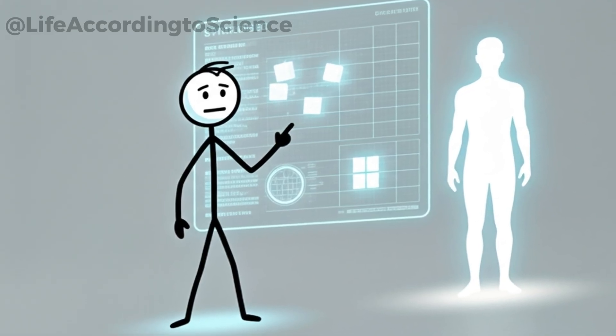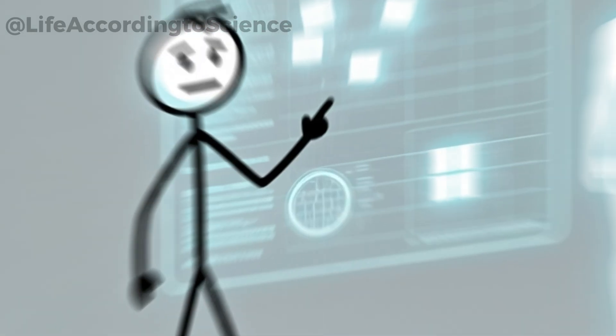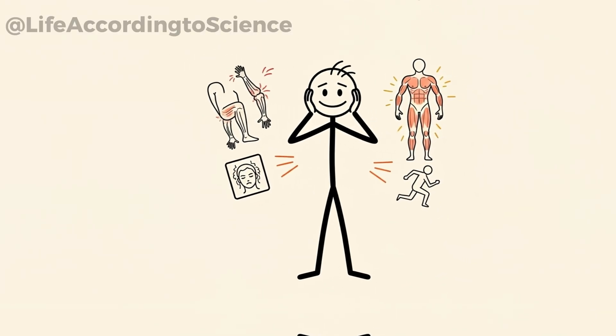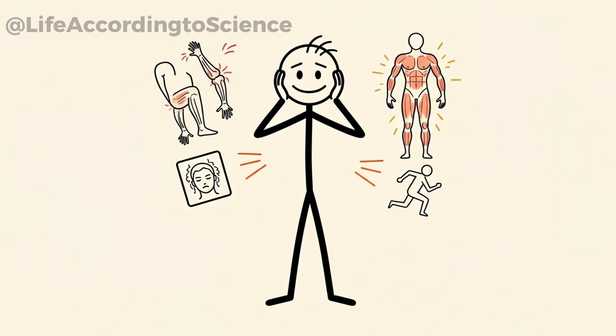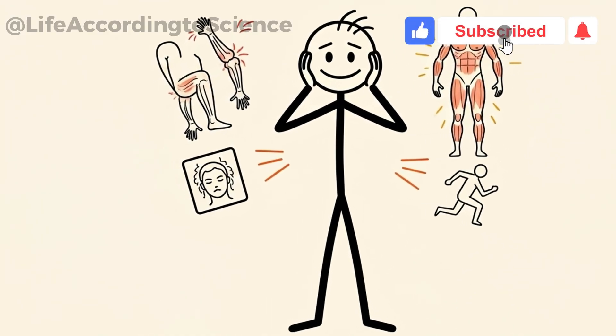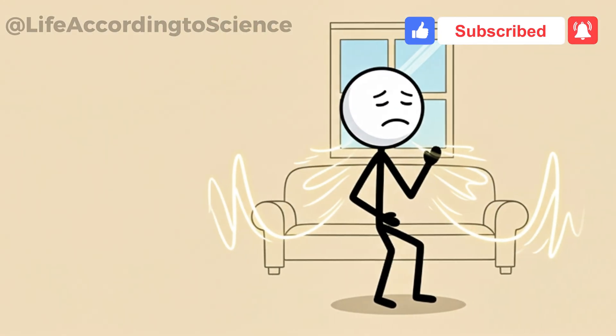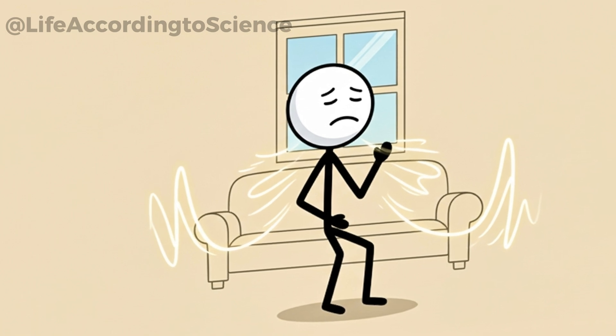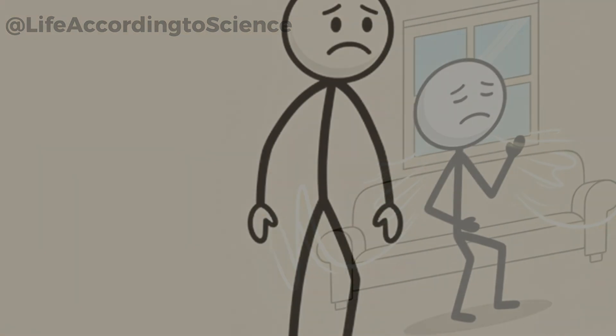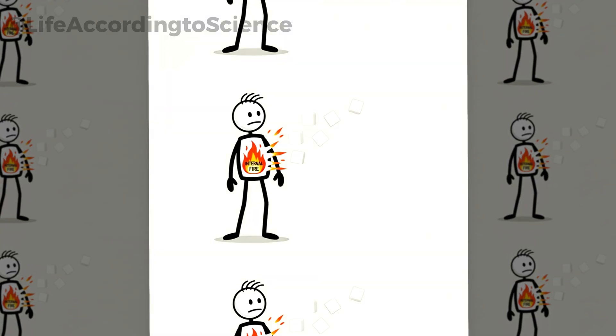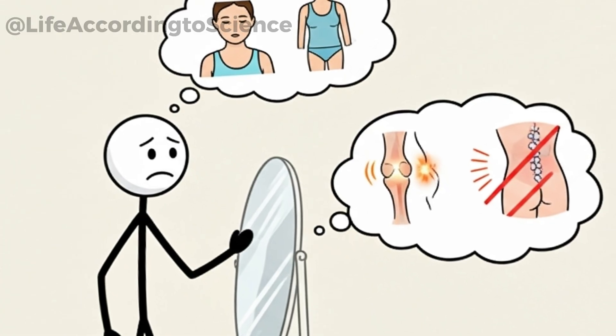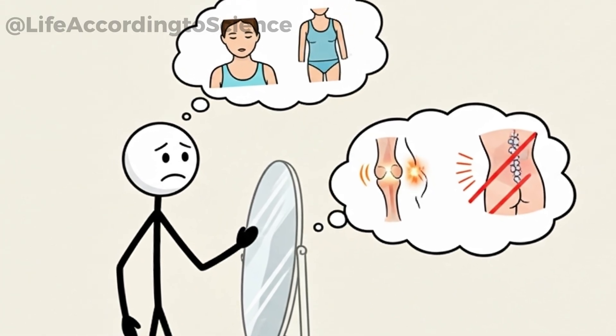Chronic inflammation is often called the silent killer, linked to conditions like arthritis, heart disease, and even cancer. And sugar is one of its biggest drivers. When you remove sugar, inflammation markers in the body begin to drop. This can lead to reduced joint pain, fewer headaches, and even improved recovery after exercise. It's like your body quietly sighs in relief. Some people describe this stage as feeling younger. Movements become easier, stiffness fades, and energy flows more freely. It's not a miracle. It's your body functioning without constant internal fire. This hidden benefit often surprises people the most. They expected weight loss or better skin, but fewer aches and pains? That feels like an unexpected gift.